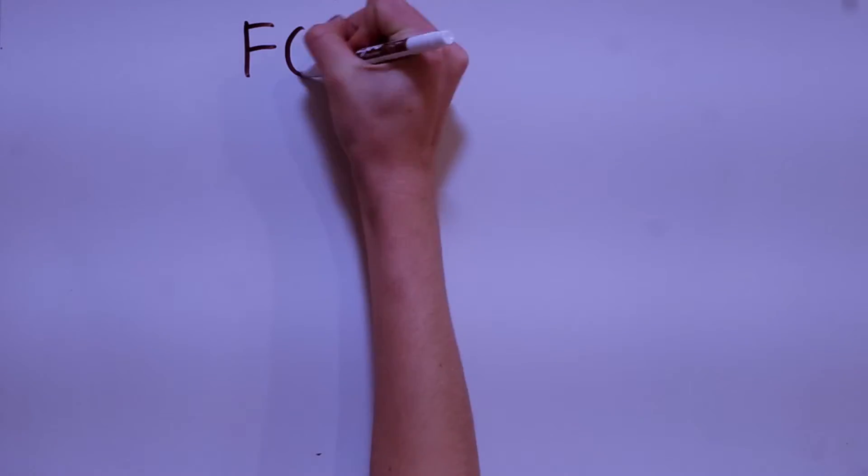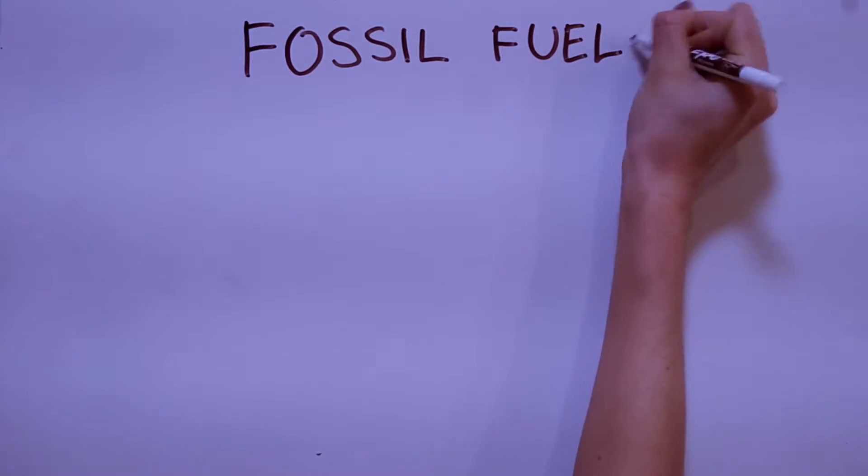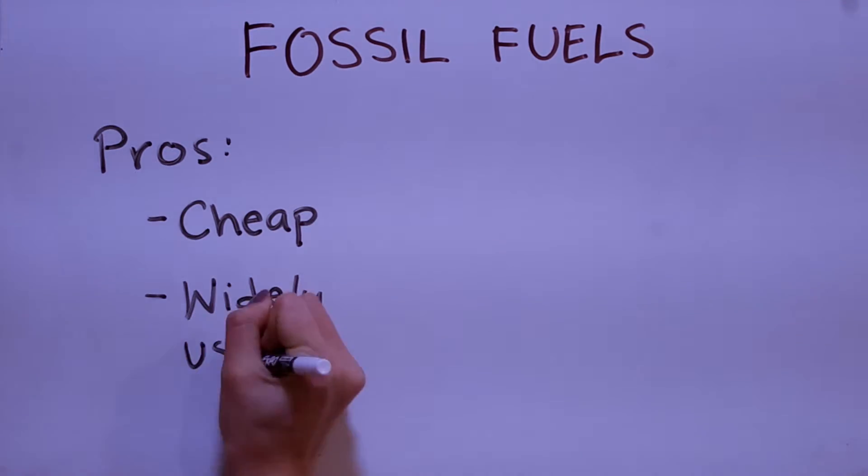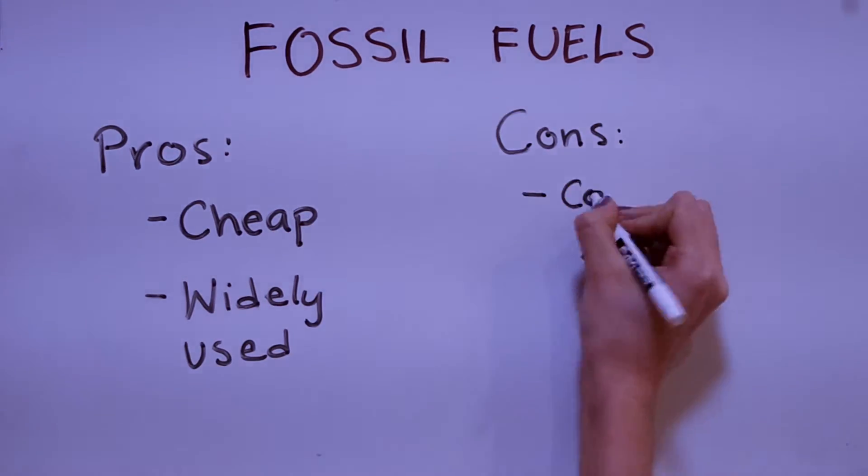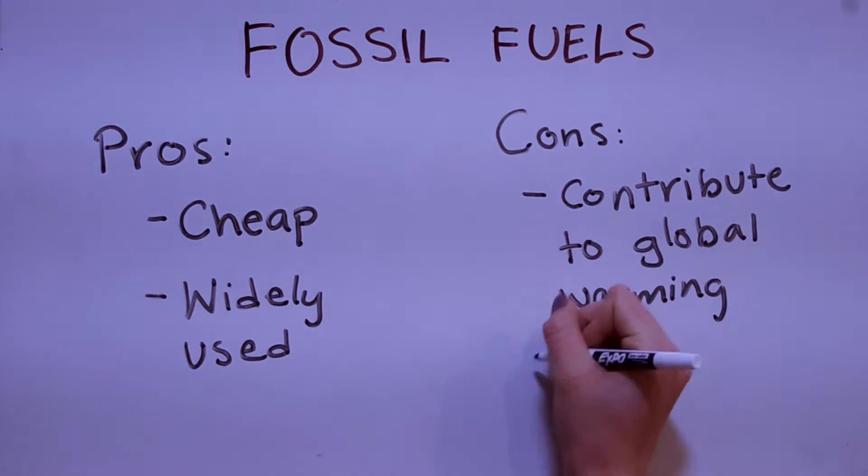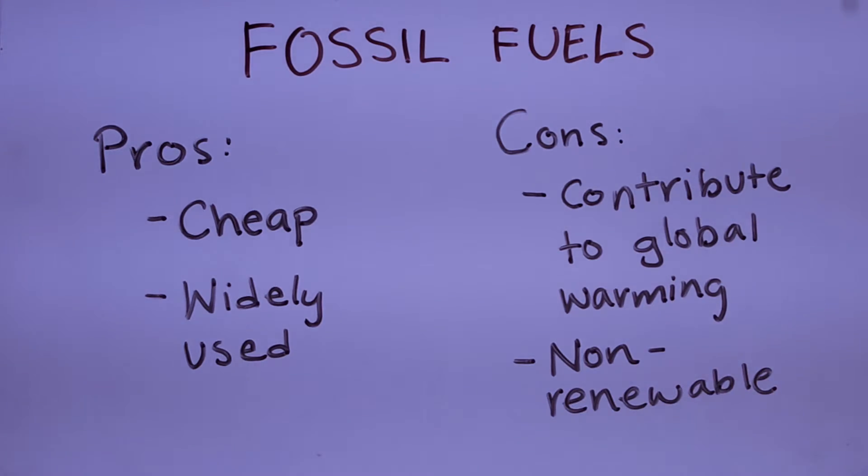Fossil fuels include coal, oil, and natural gas. Reasons to continue using fossil fuels are that they're cheap and they're already widely used. Some cons of using fossil fuels are that they contribute greatly to global warming and they're non-renewable.